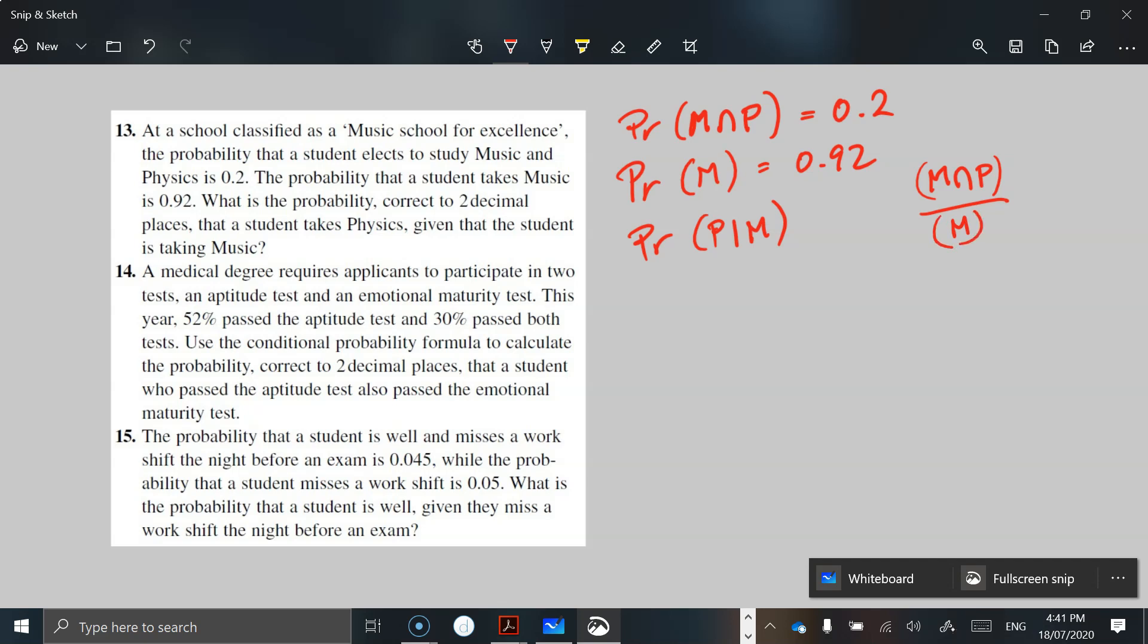And so if we put that into our calculator, we're looking at 0.2 divided by 0.92. We end up getting, and we want two decimal places, we're going to have 0.22 as the answer. All right.